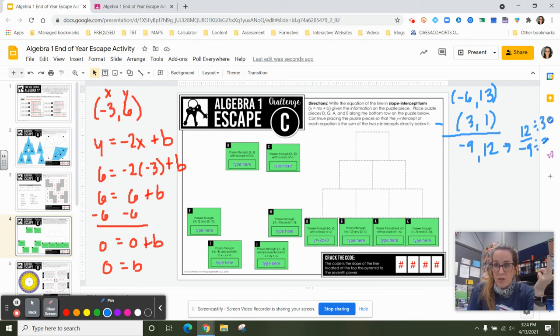Right? So that simplifies to, let's see here, negative 4 over 3. All right. So I've got the first part. So I have y equals negative 4 thirds x plus b.